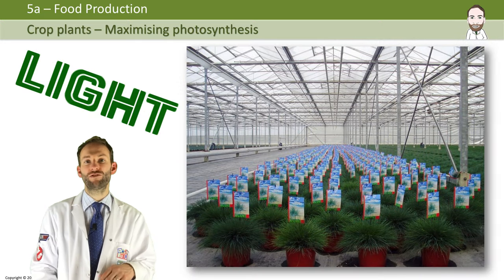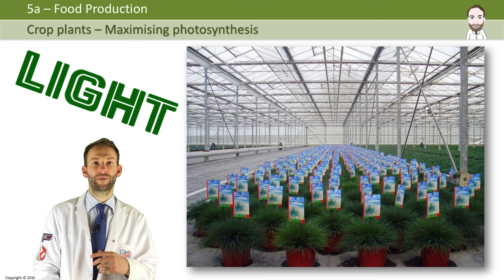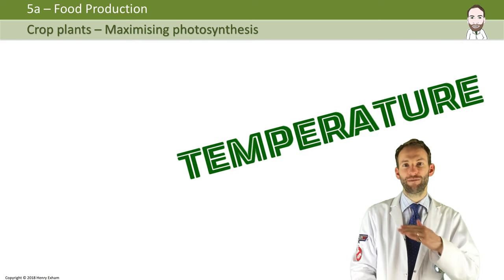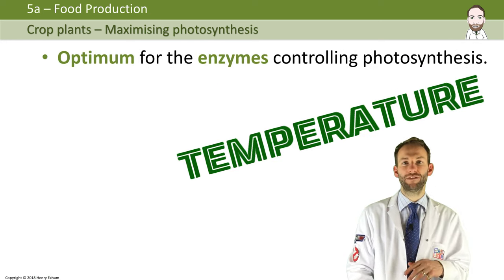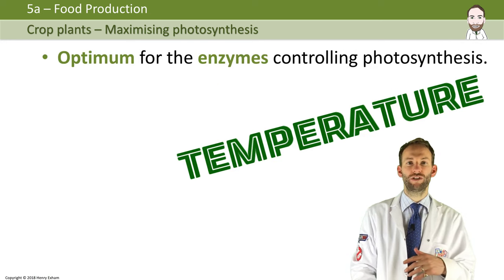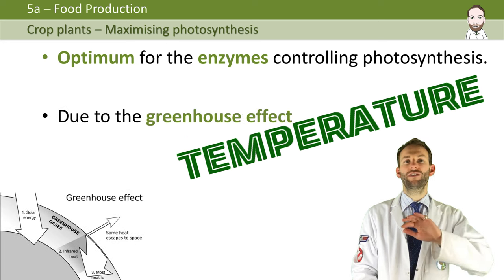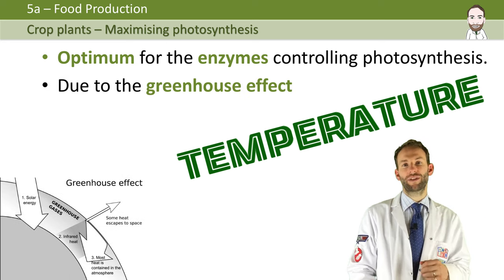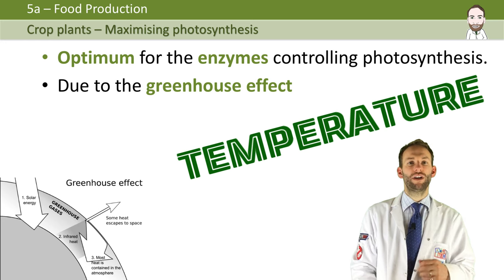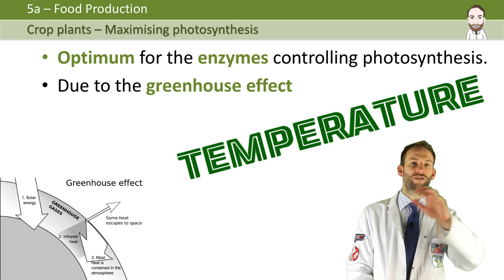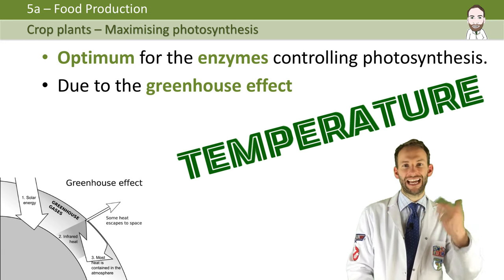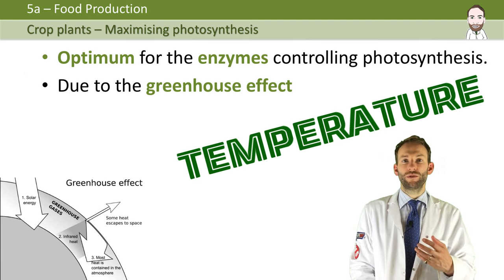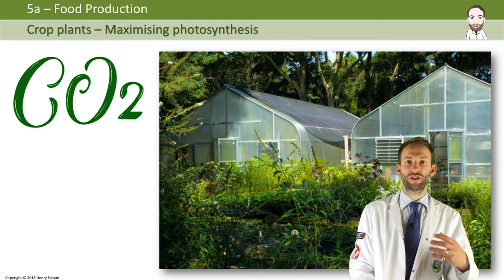First of all, light — the transparent material allows more light in for photosynthesis, and a farmer can also add extra lighting for the winter months. You can increase the temperature using heaters, keeping it at the optimum level for the enzymes that control photosynthesis. Also, because of the greenhouse effect — which is where the name comes from — there is a higher temperature inside, because you're trapping and heating the air.